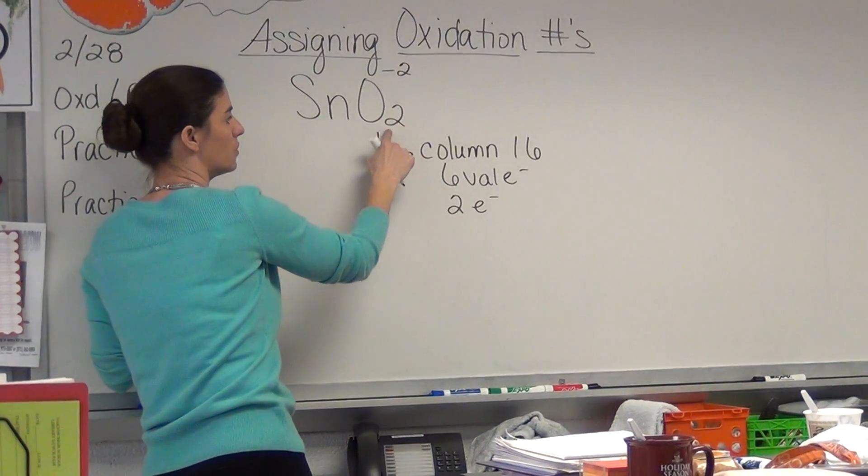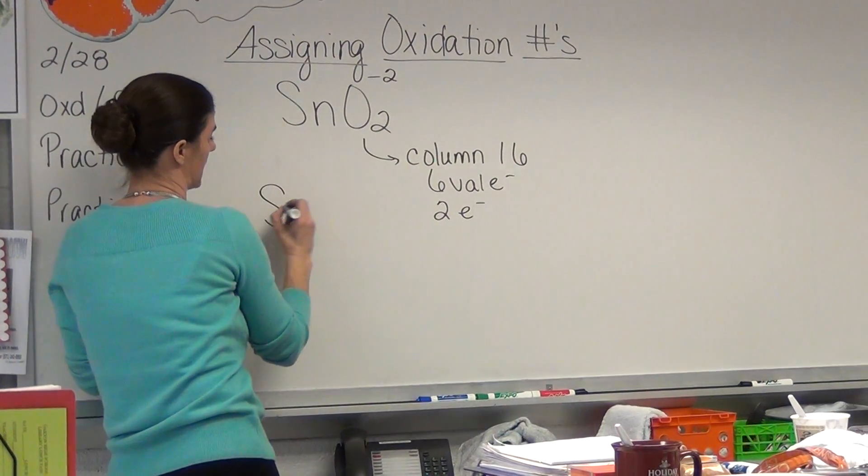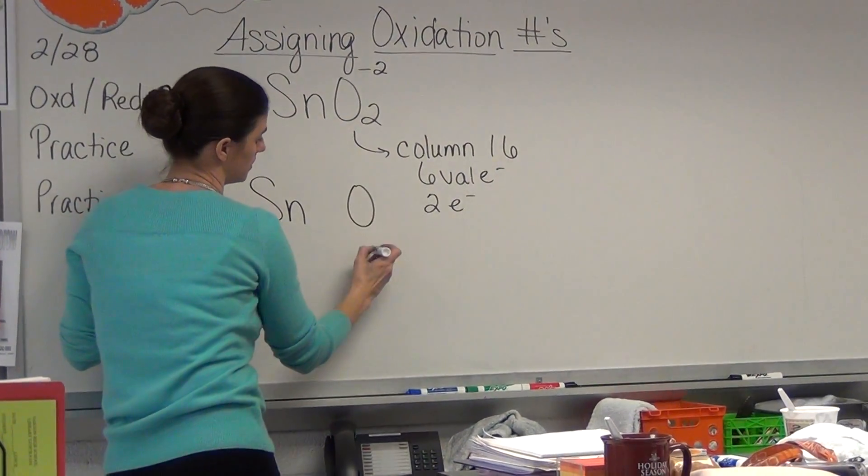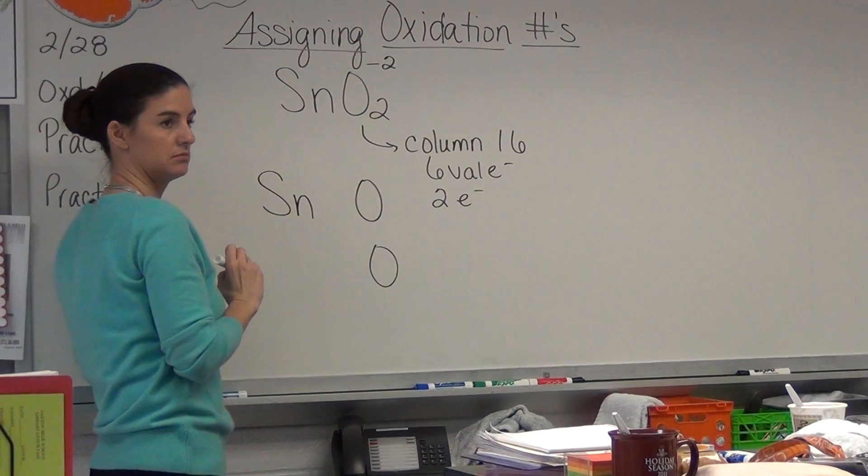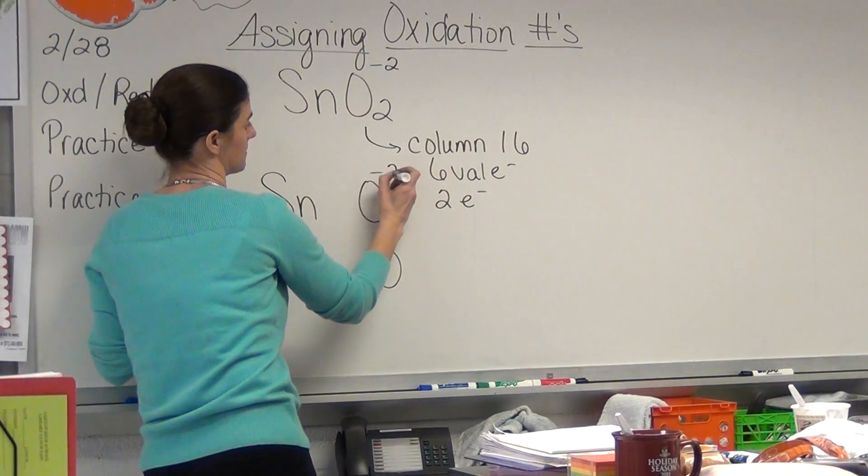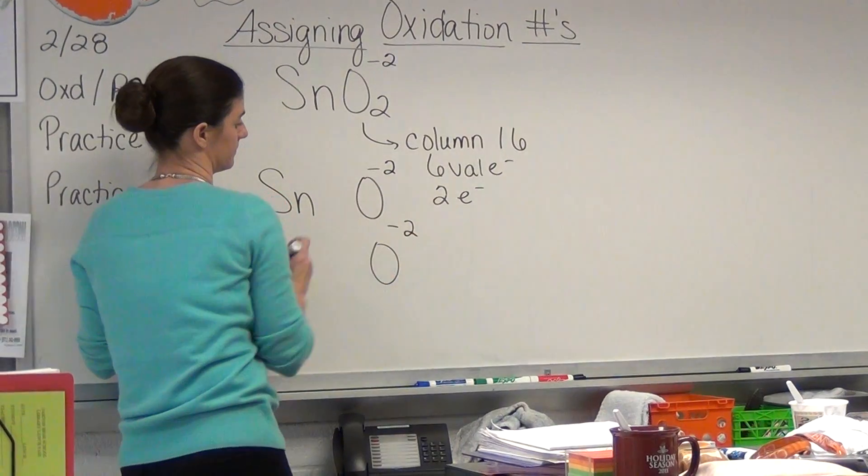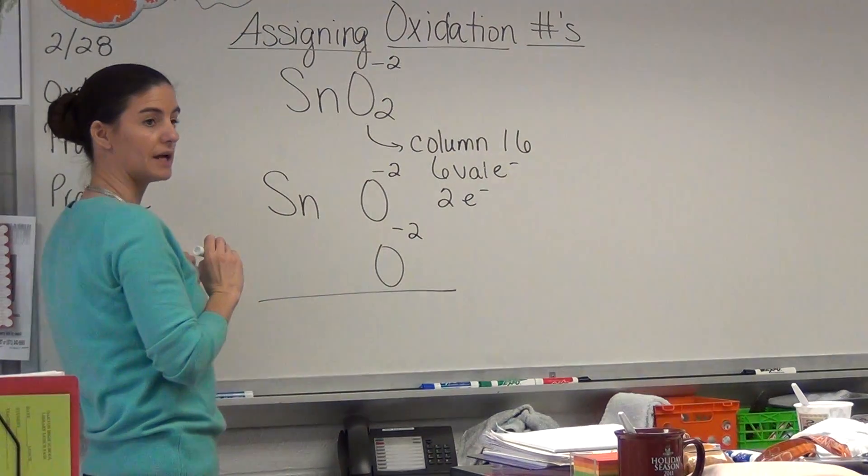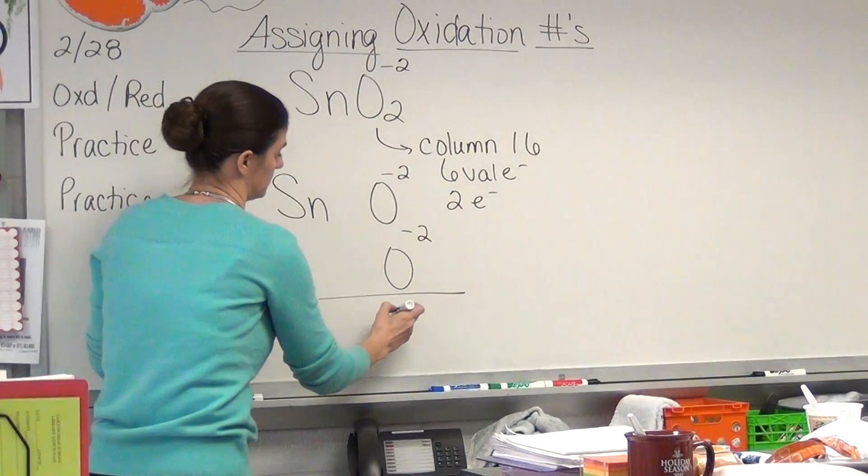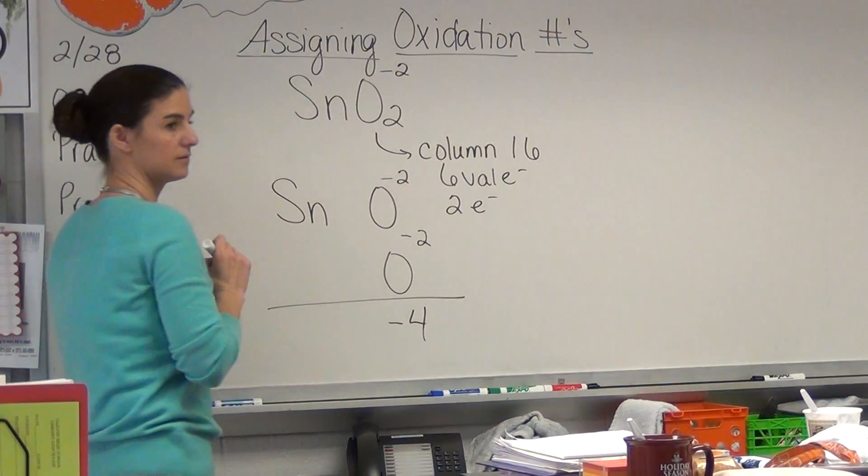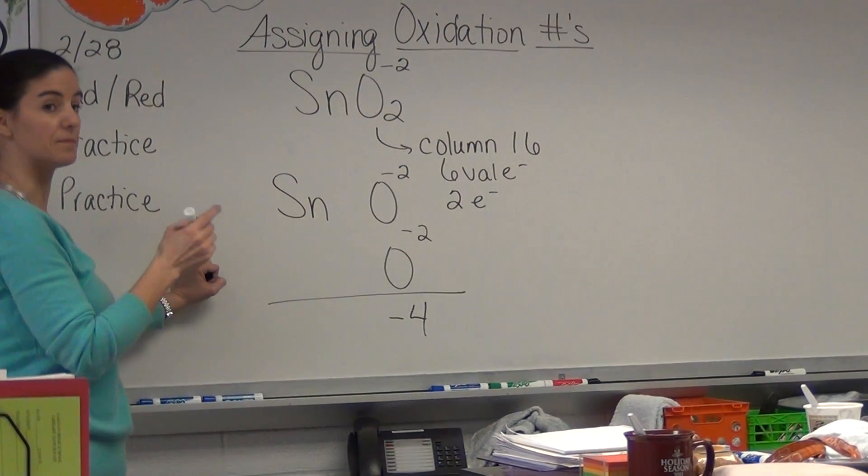Now, the fact that we have two of them, it's like saying we have Sn O and O. Each oxygen has a minus two, so our total minus charge is minus four. We have to balance it out.